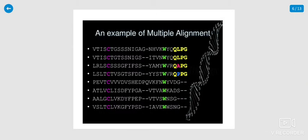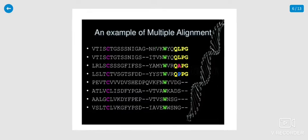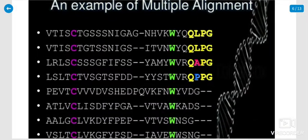Examples of multiple sequence alignment: various sequences are available, including W and alternate kinds. At the same time, sequences such as Q, L, P, G and Q, A, P, G are present. In these multiple examples, four sequences are represented in this area.